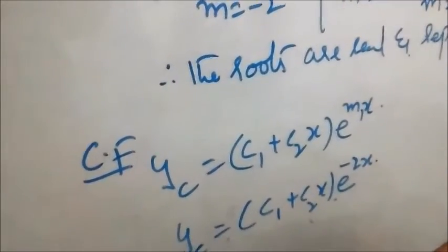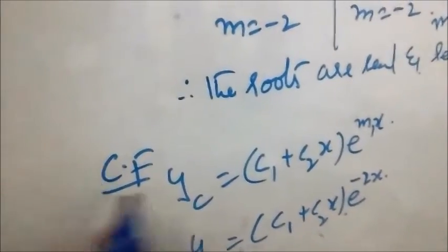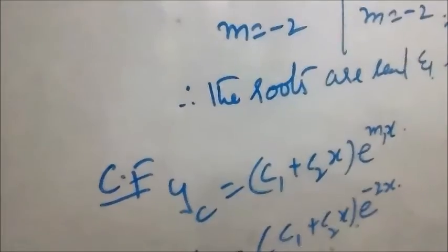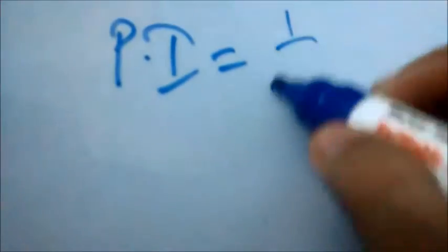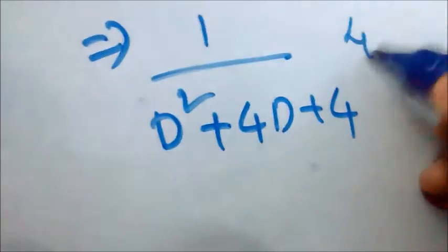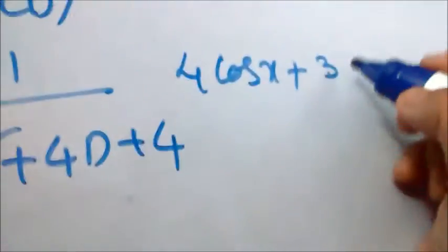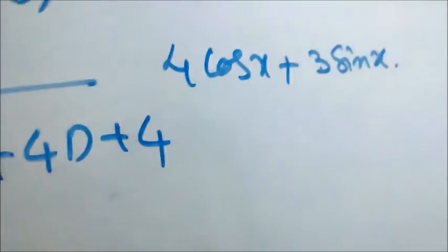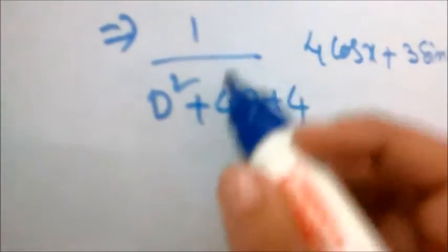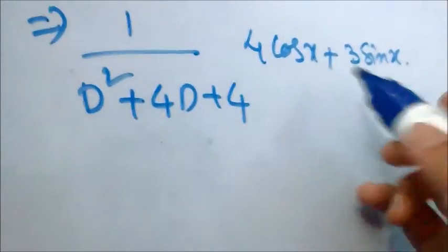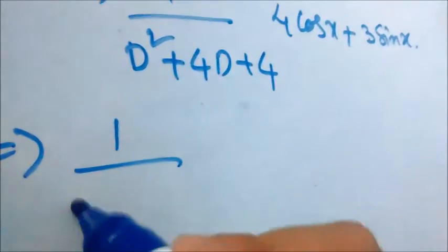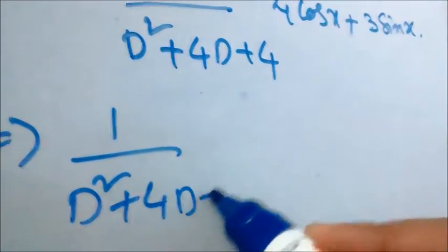Now we have to find PI. PI = 1/f(D) · X, where f(D) = D² + 4D + 4 and X = 4cos(x) + 3sin(x). We apply 1/f(D) to each and every term of X, giving: 1/(D² + 4D + 4) · 4cos(x) + 1/(D² + 4D + 4) · 3sin(x).